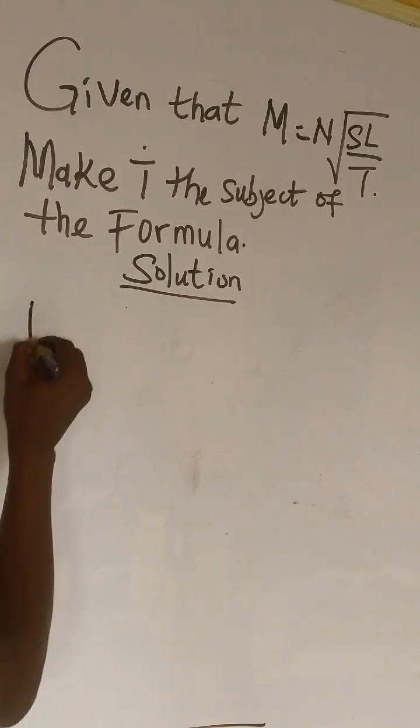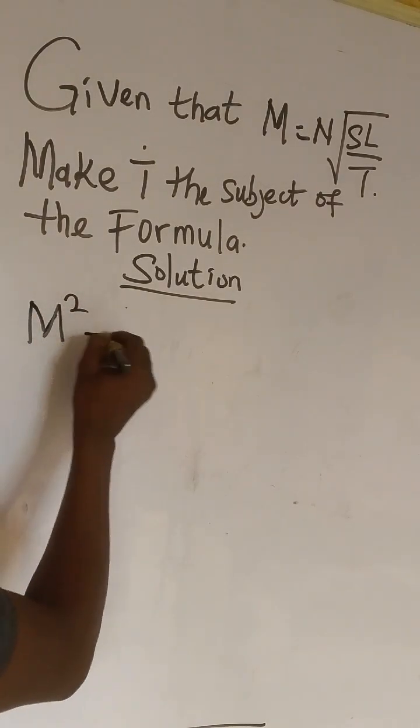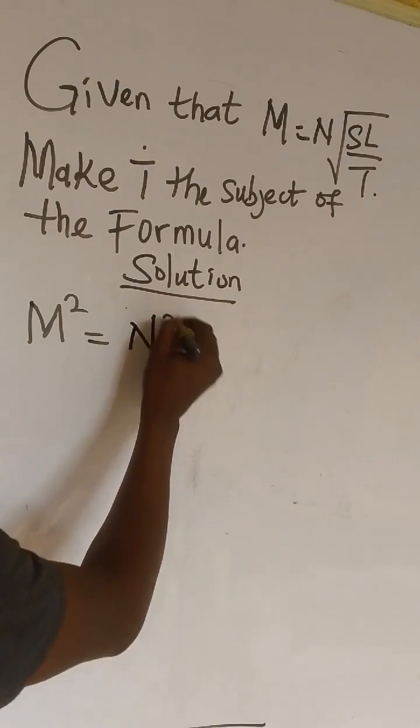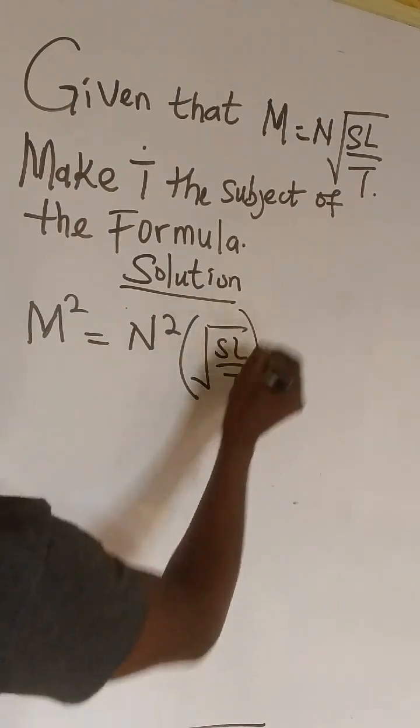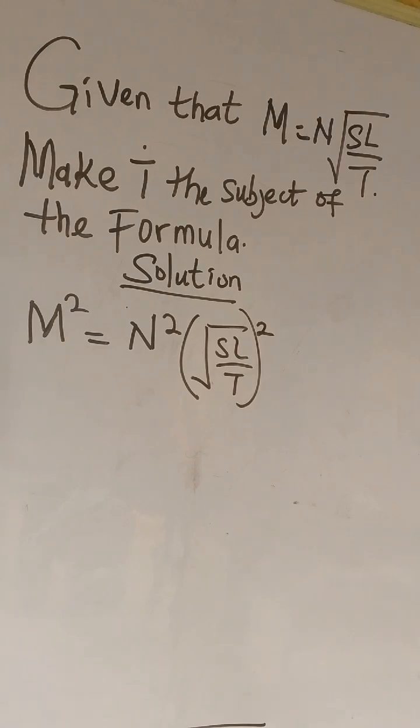So first step is we have M squared equals N squared into brackets root of SL over T, squared. This is our first step.